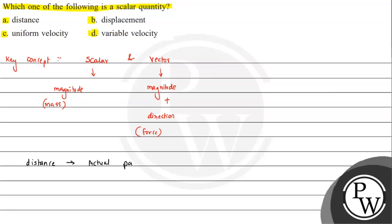Distance is the actual path length travelled, irrespective of the direction. For example, if a body travels 2 km, then 1 km down, then 3 km in another direction, the total distance is simply 3 plus 1 plus 2 equals 6 km. We just add the path lengths regardless of direction.